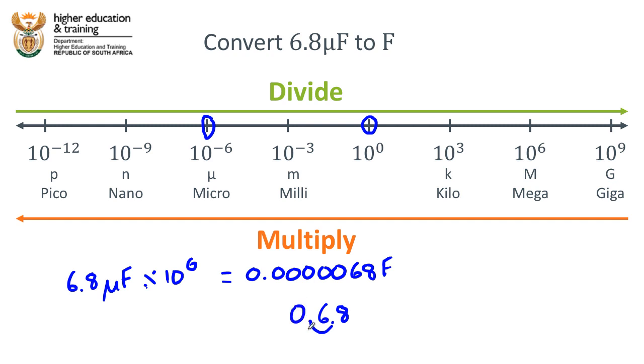So if we start with 6.8 and move the decimal point 6 units to the left: 1, we'll have to put a zero there. 2, another zero. 3, another zero. 4, another zero.